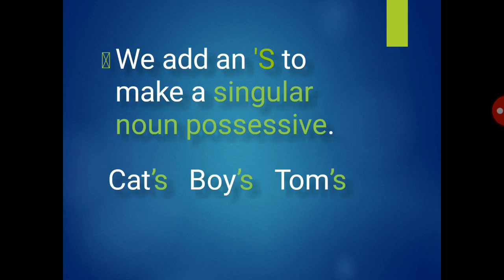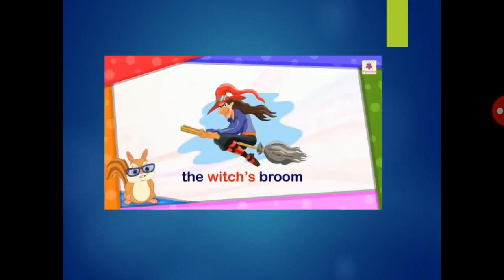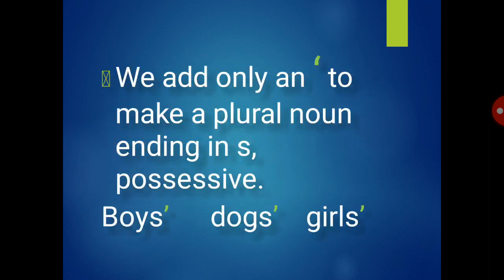We add an apostrophe s to make a singular noun possessive. For example: cat's, boy's, Tom's. As you can see, we are adding apostrophe s to make a singular noun possessive — showing the things that belong to that certain person.